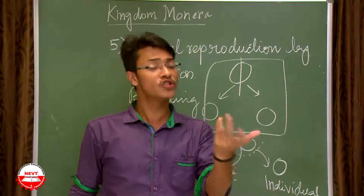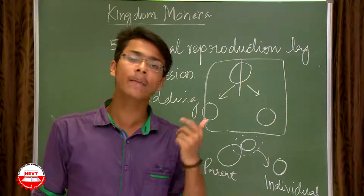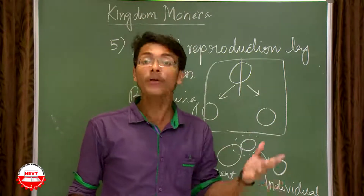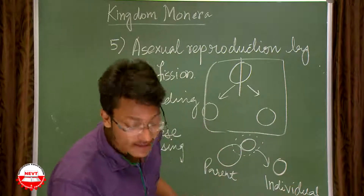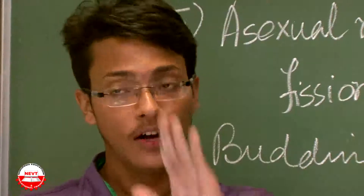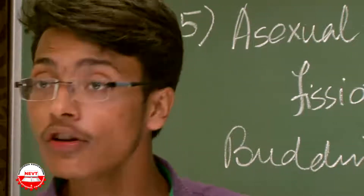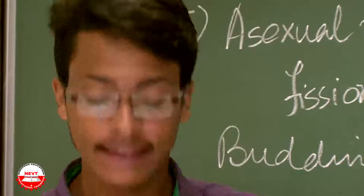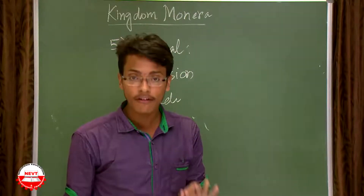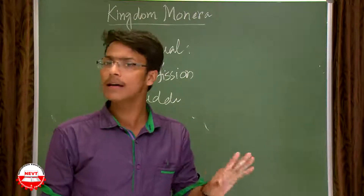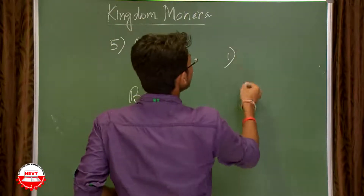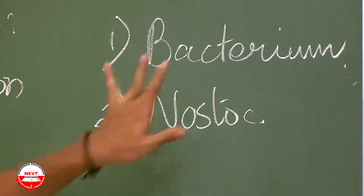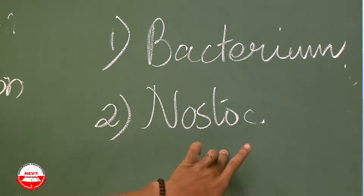Mostly, though not all, these bacteria or Monerans are disease-causing. For example, tuberculosis is caused by a bacterium, and cholera is caused by Vibrio cholerae. The two examples to remember under Monerans are bacterium and Nostoc.